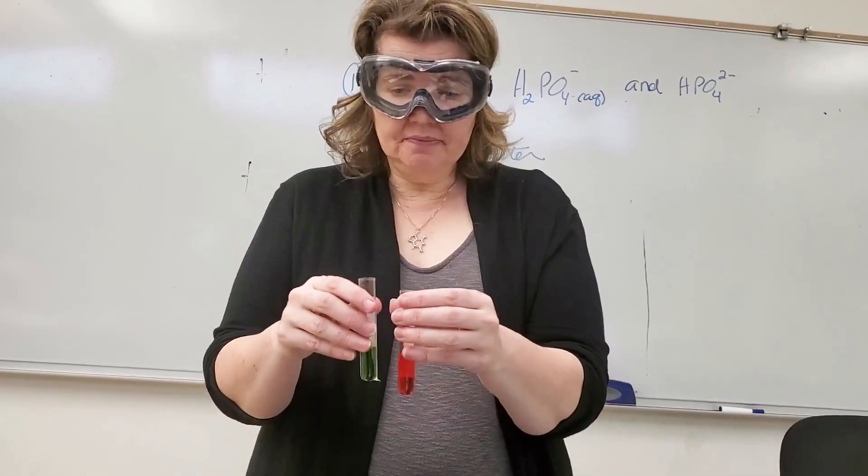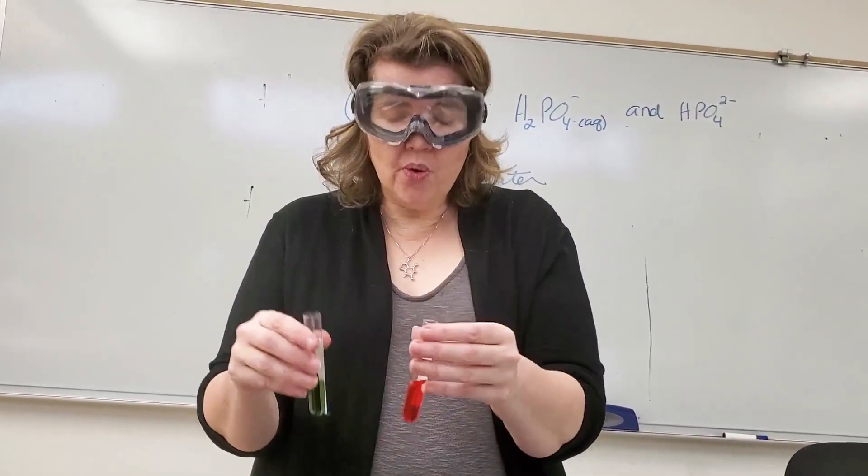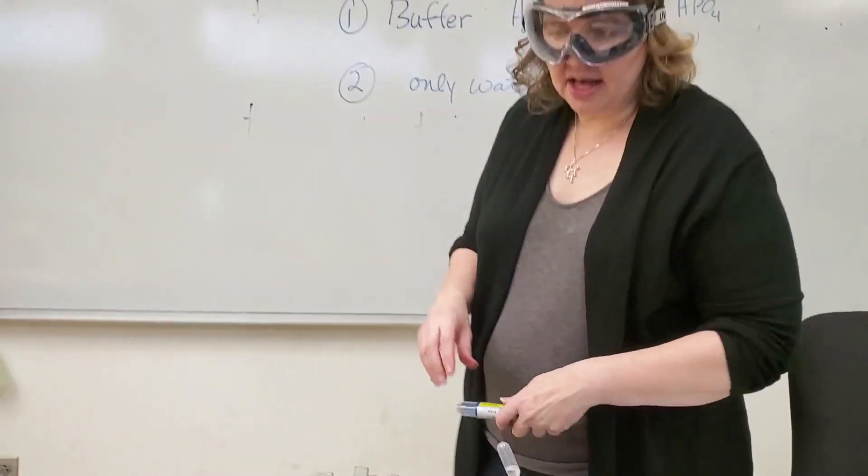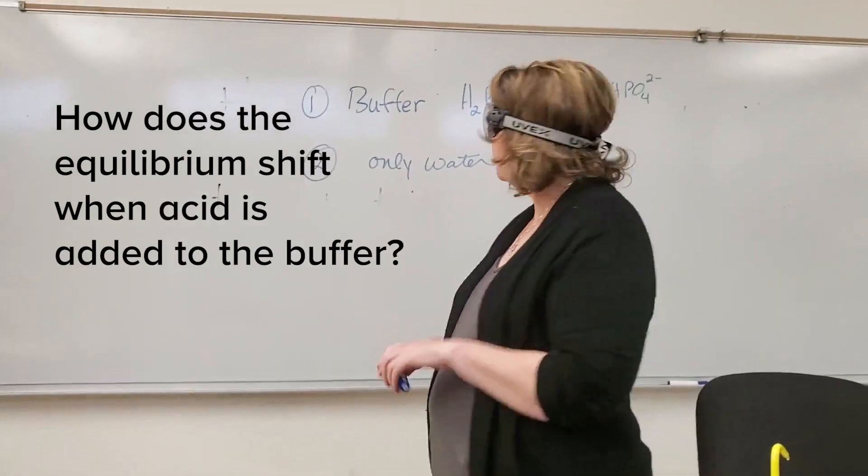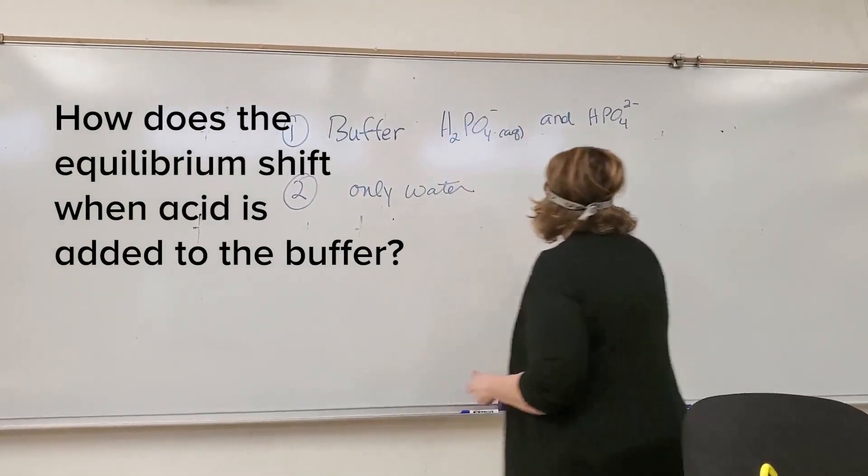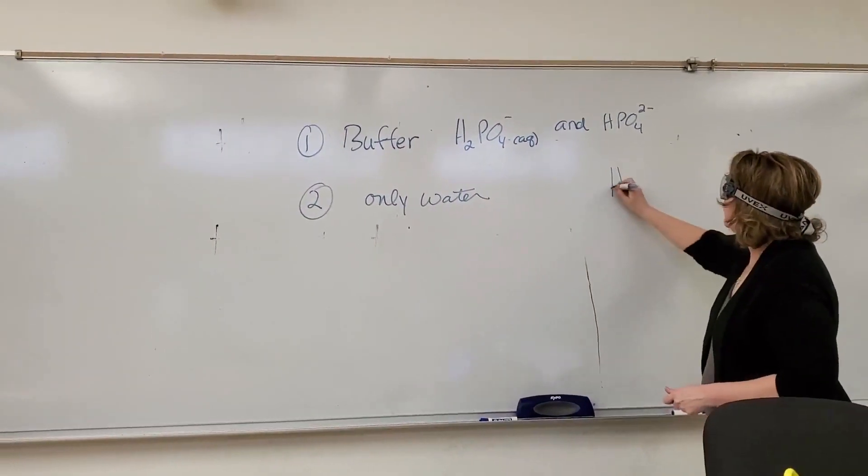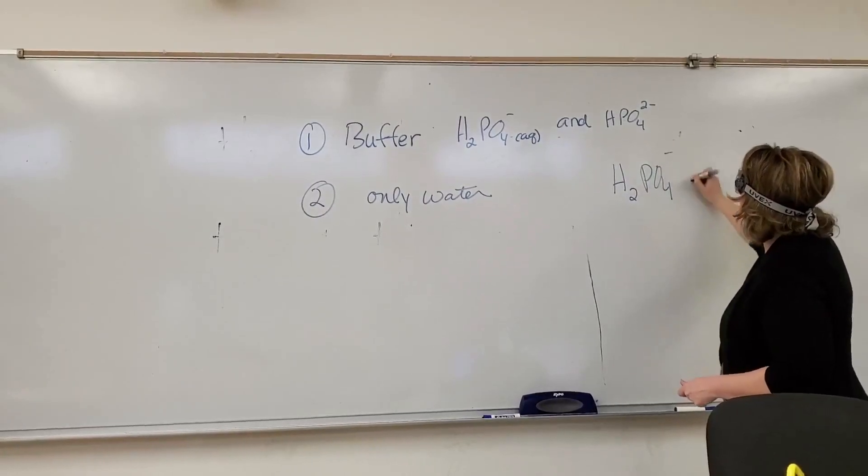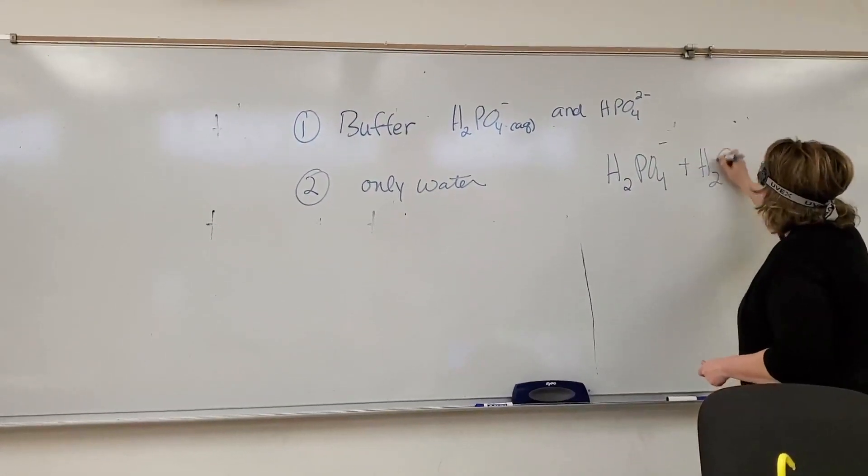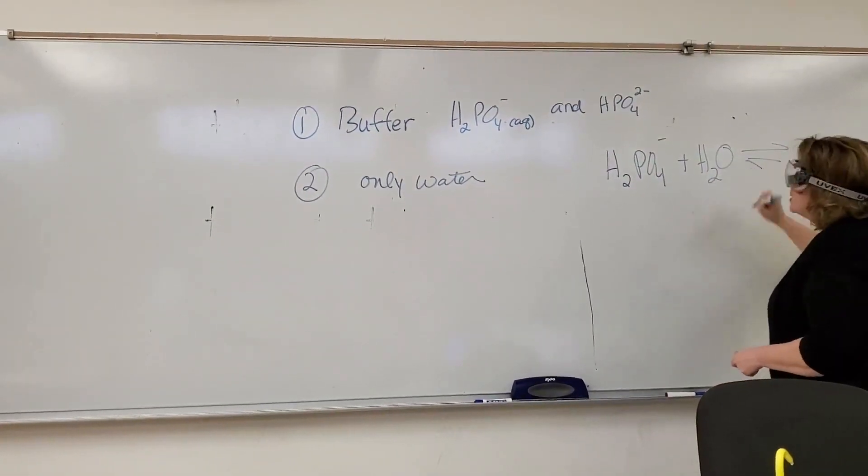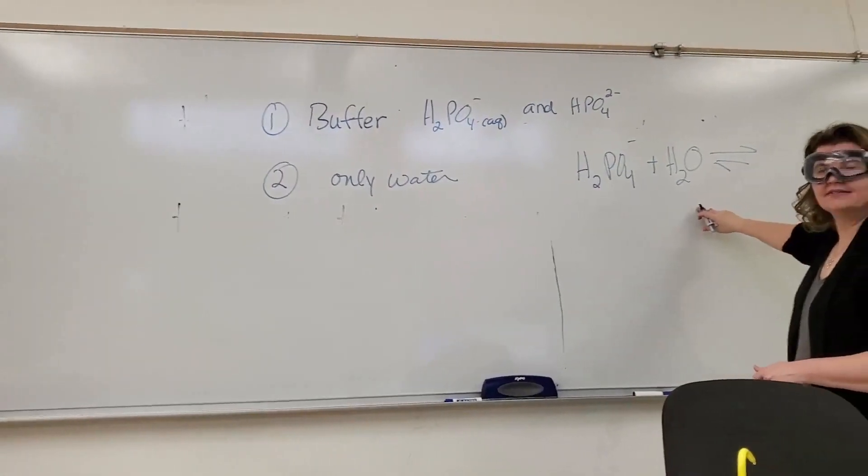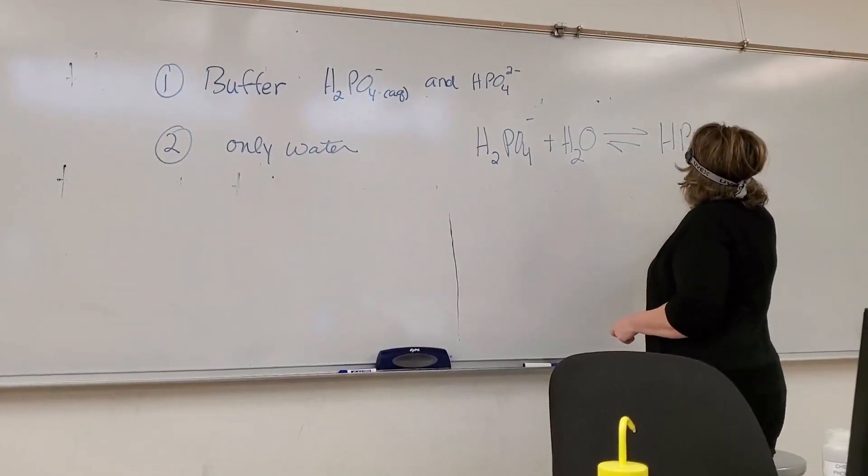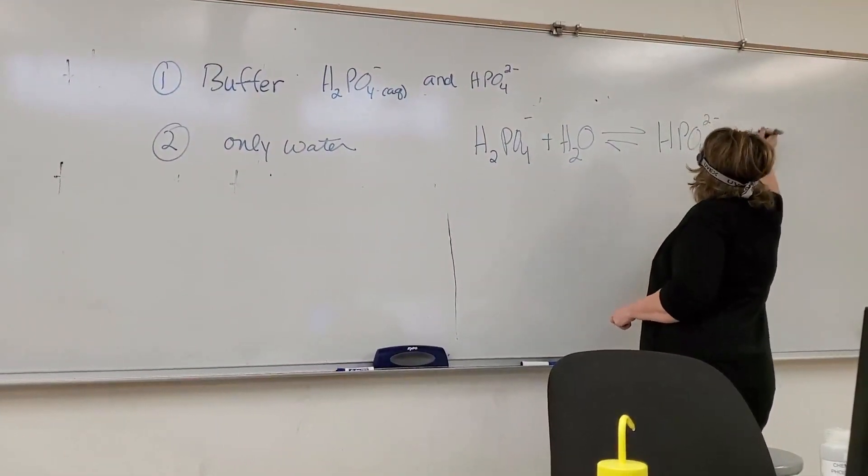So buffers have the capacity to absorb hydronium. So let's take a look at what's going on on the board with that. So if I'm looking at my buffer, my buffer has two components. It has H2PO4 and this is a weak acid. So in equilibrium, is going to make HPO4 two negative, and hydronium.